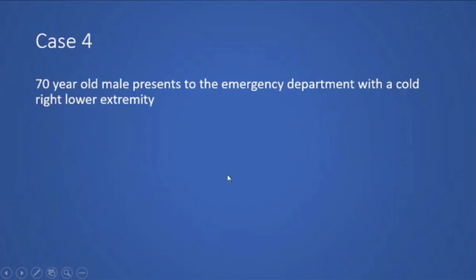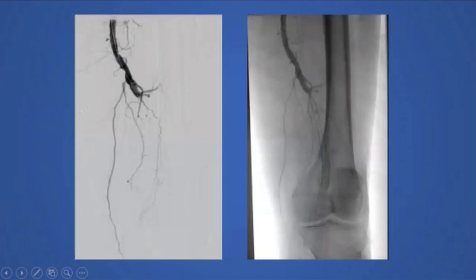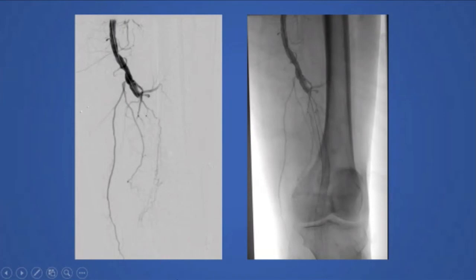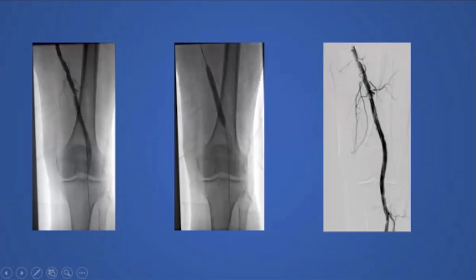The next case is a 70-year-old male presenting with a cold right lower extremity. We went up and over with our catheter and sheath, and angiography demonstrated an acute occlusion extending from the distal SFA as it enters the adductor canal, with a previously placed stent that is completely occluded. Because this was an acute thrombosis, we performed lysis. The patient had overnight lysis, we were able to cross the stent, perform angioplasty, and restore flow to the lower extremity.